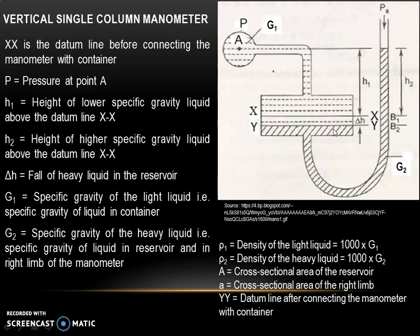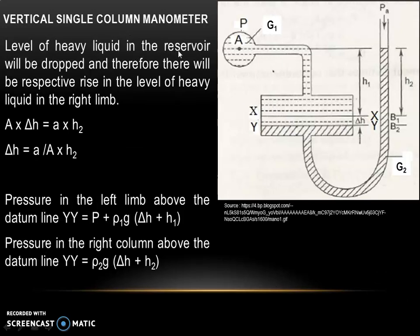YY is the datum line after connecting the manometer with the container. The level of heavy liquid in the reservoir drops by amount delta H, and there is a corresponding rise in the right limb by amount H2. We equate the volume displaced: A into delta H equals small a into H2. Therefore, the expression for delta H is equal to (a / A) into H2.